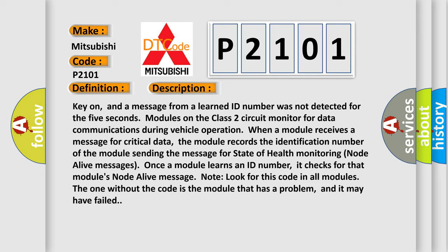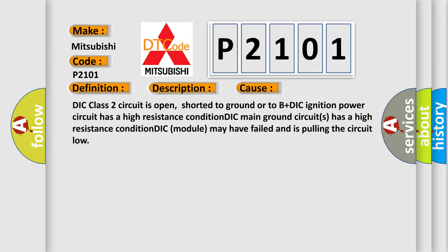This diagnostic error occurs most often in these cases: DIC class 2 circuit is open, shorted to ground or to B plus. DIC ignition power circuit has a high resistance condition. DIC main ground circuits has a high resistance condition. DIC module may have failed and is pulling the circuit low.